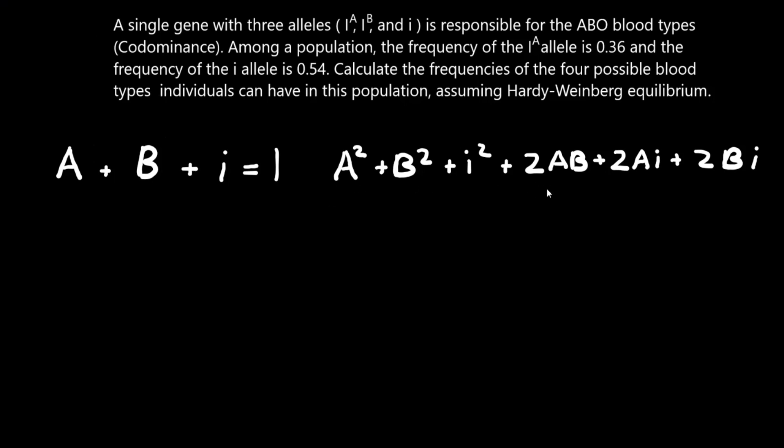This is the genotype frequency equation here. So we're given the frequency of the A allele, which is 0.36, and the I recessive allele, which is 0.54. And now we can determine B by subtracting 0.36 and 0.54 from 1, and we get 0.1.